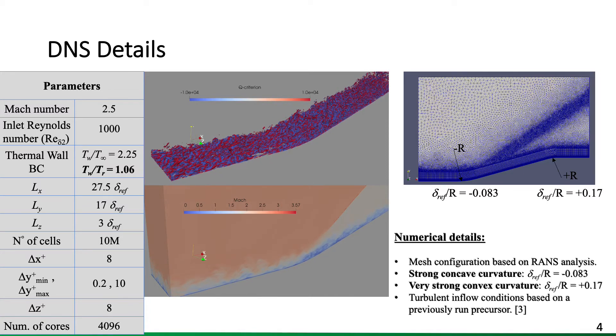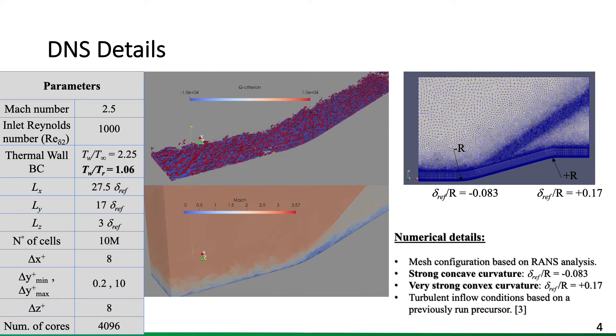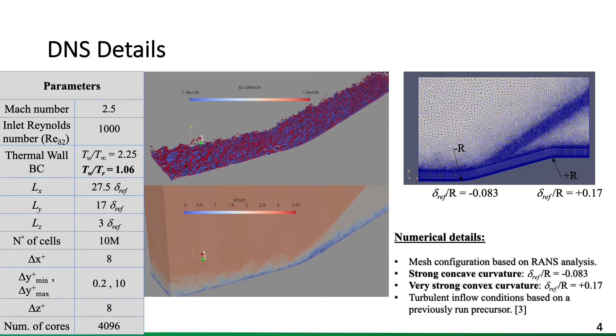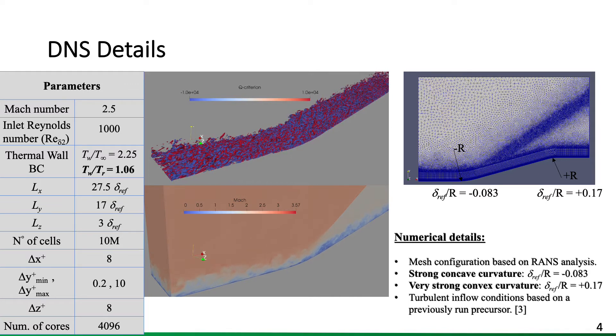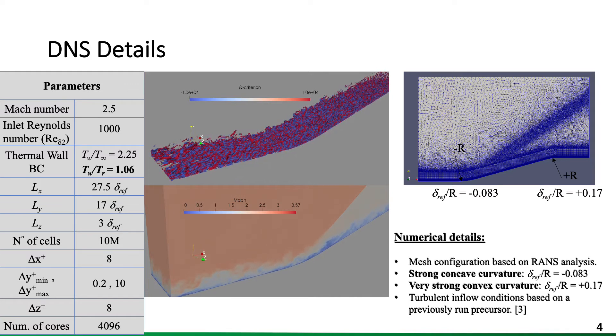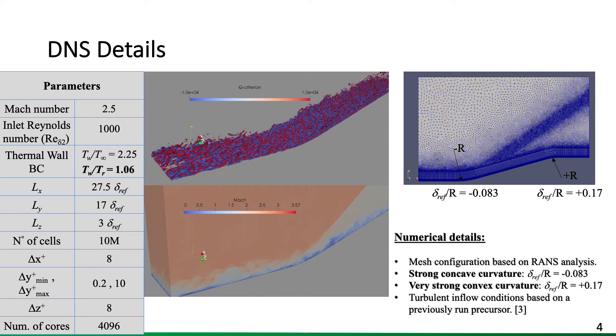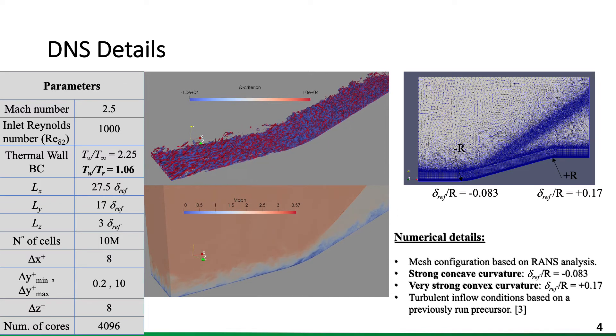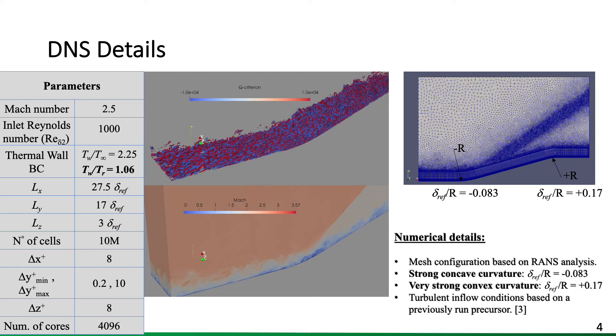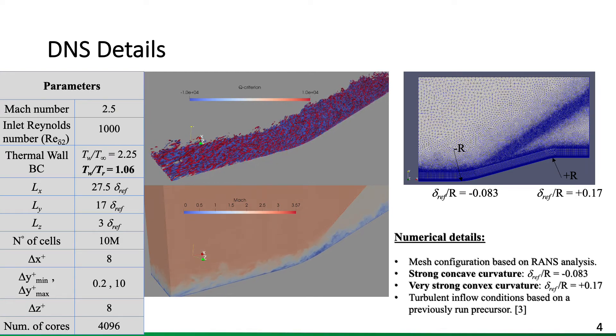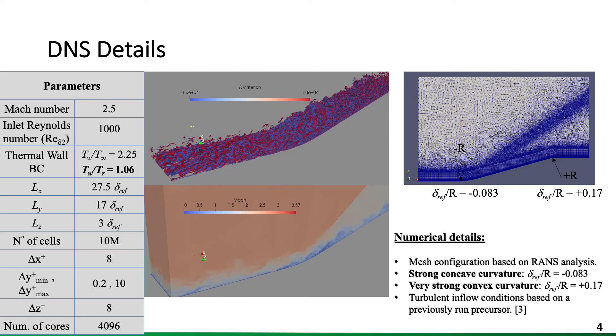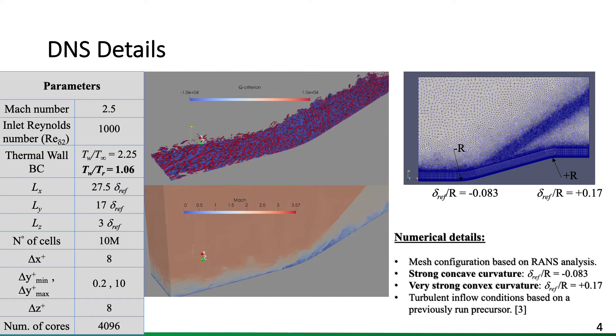Towards the right, see the mesh configuration for the present study, which includes a strong concave wall towards the beginning of the domain. And the main interest for the present study is the convex region, which is a very strong convex curvature. The inflow information is based on a previous run. More details on reference number 3, which is towards the end of the presentation.